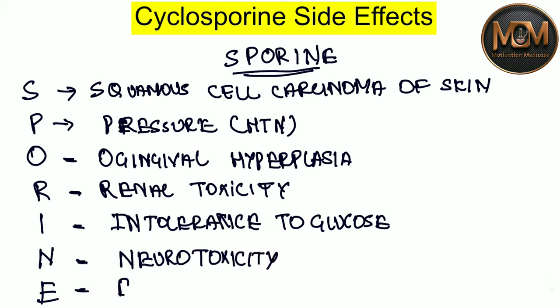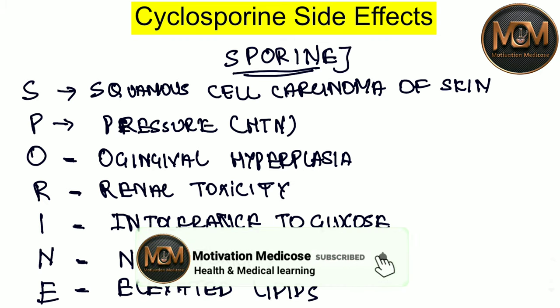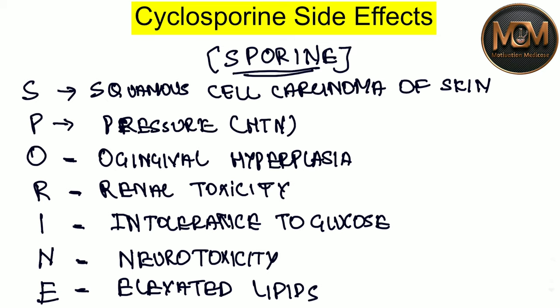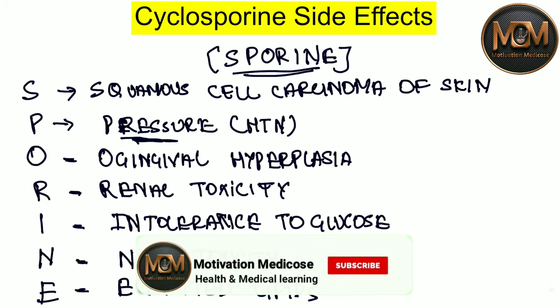From the E, it is elevated lipids. So these are all the side effects of cyclosporine: S — squamous cell carcinoma of skin; P — hypertension; O — gingival hyperplasia; R — renal toxicity; I — intolerance to glucose; N — neurotoxicity; E — elevated lipids. With the mnemonic SPORINE, you can easily remember all these side effects. I hope this video has given you a good understanding. Thanks for watching.